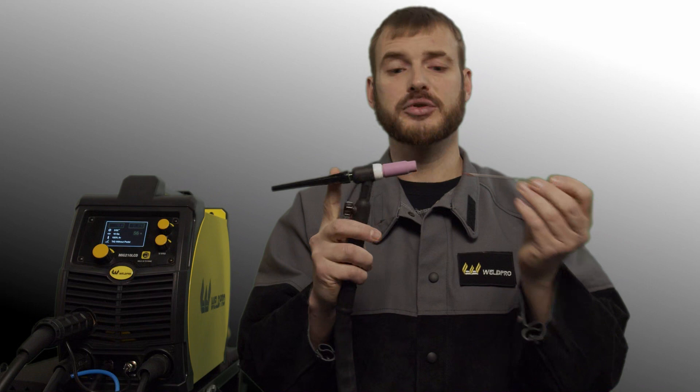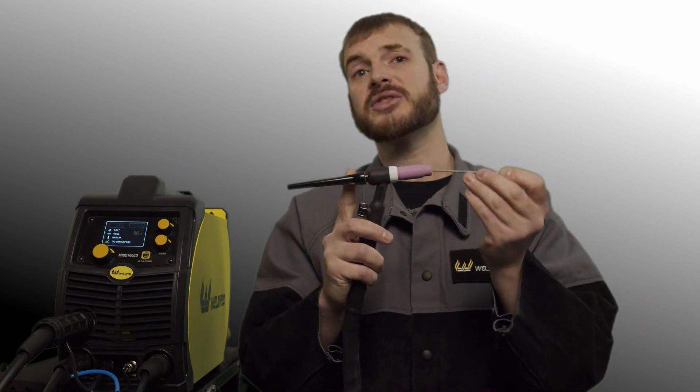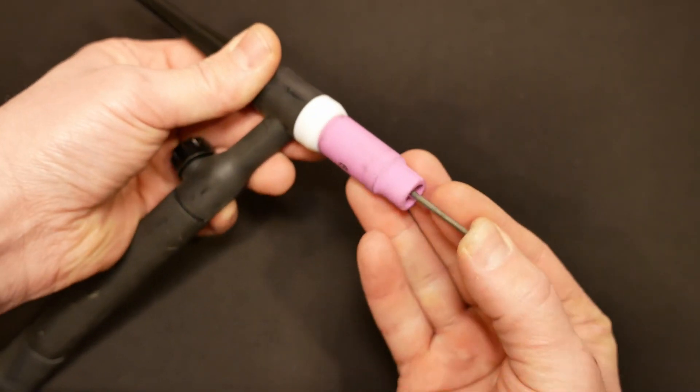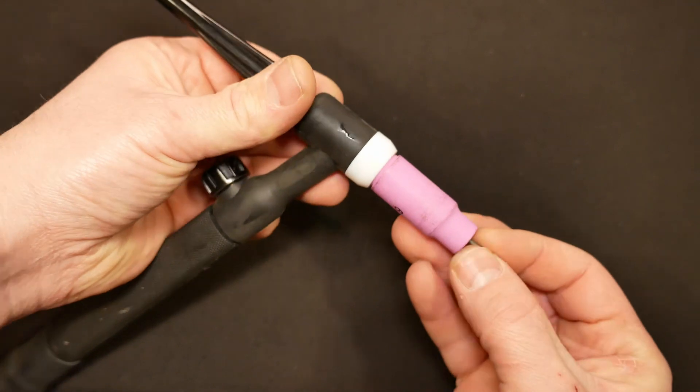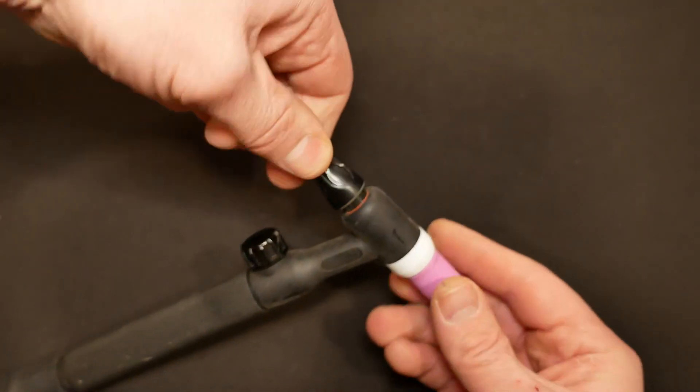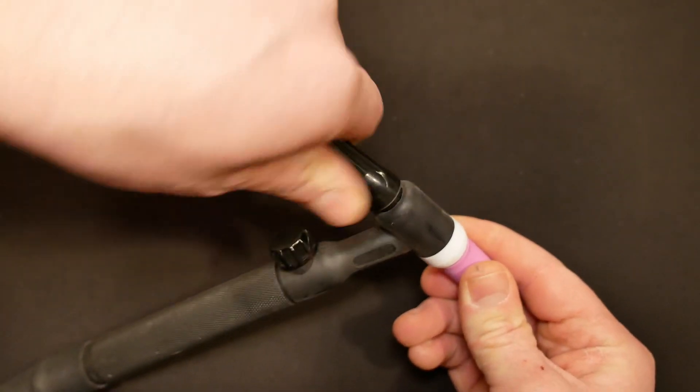The tungsten that's included with our package is a 3/32nds 2% thoriated tungsten. With our back cap loosened up, we're going to go ahead and insert the tungsten into the collet body. The tungsten should slide in freely and you should be able to tighten the back cap to secure the tungsten in the torch.